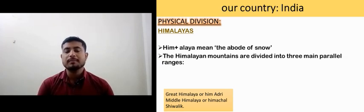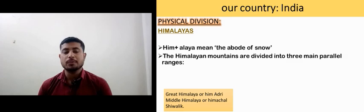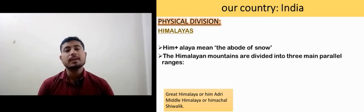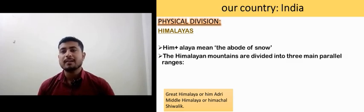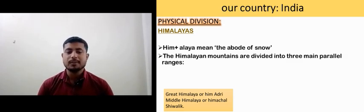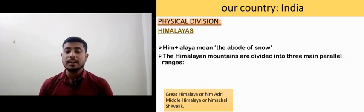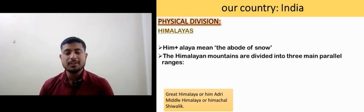Himalaya — Him plus Alaya — means the abode of snow. The Himalayan mountains are divided into three main parallel ranges: the first one is the Great Himalaya or Himadri, the second one is the Middle Himalaya or Himachal, and the third one is Shivalik.